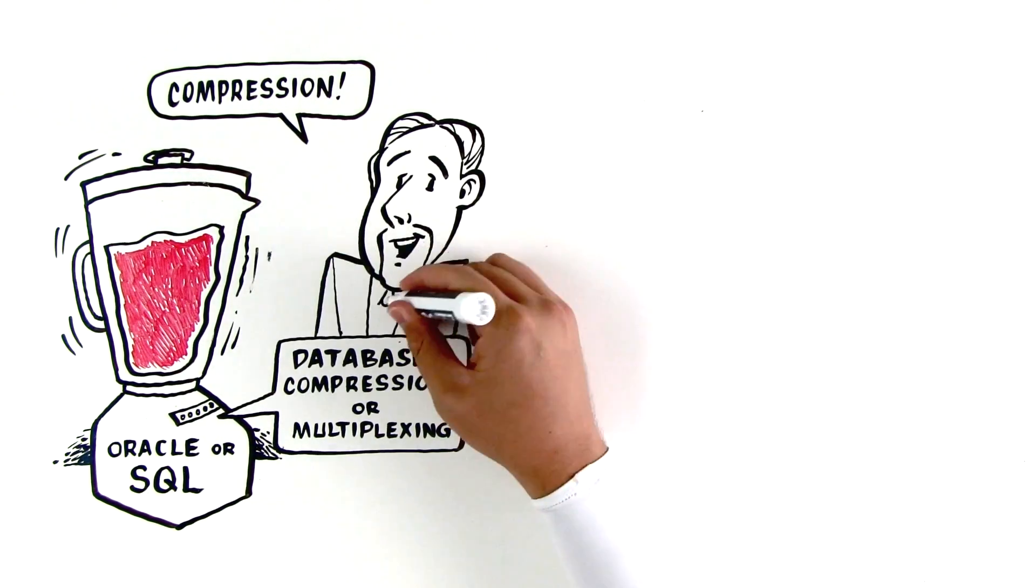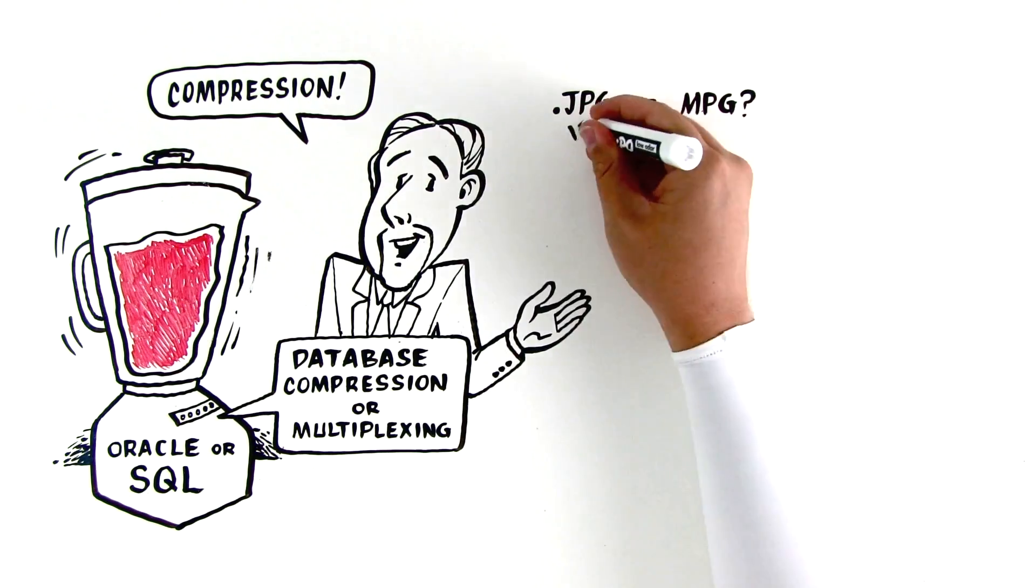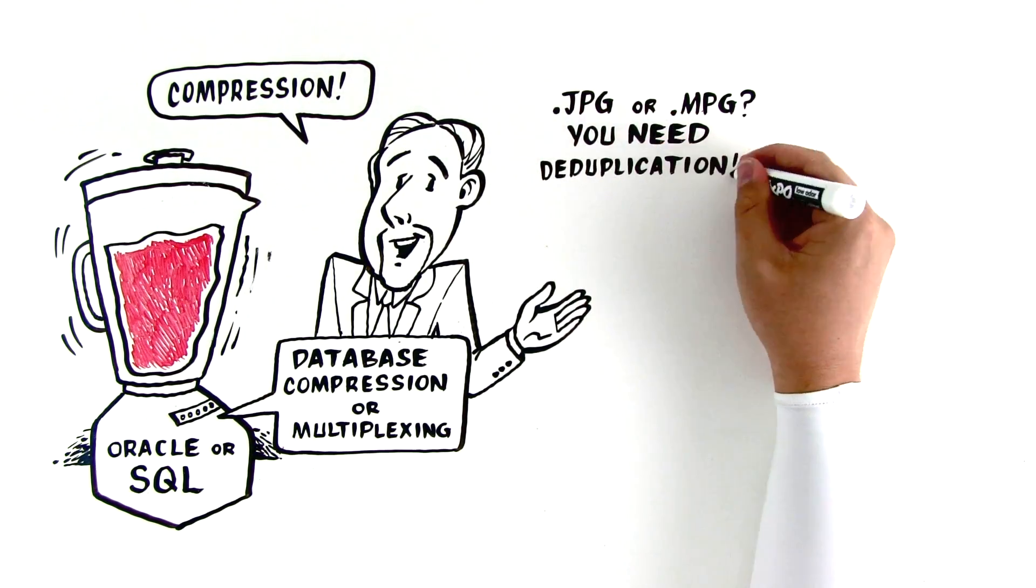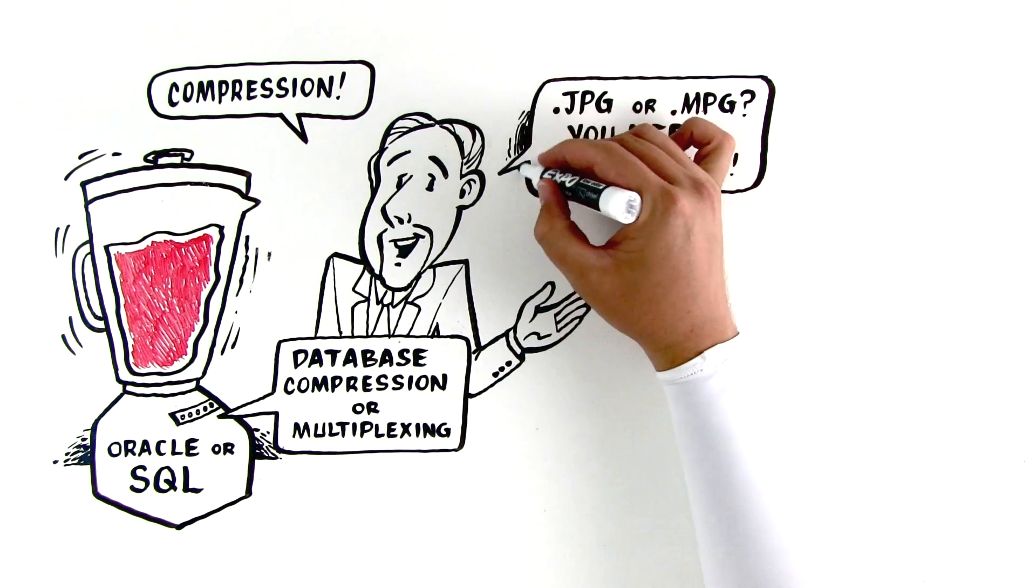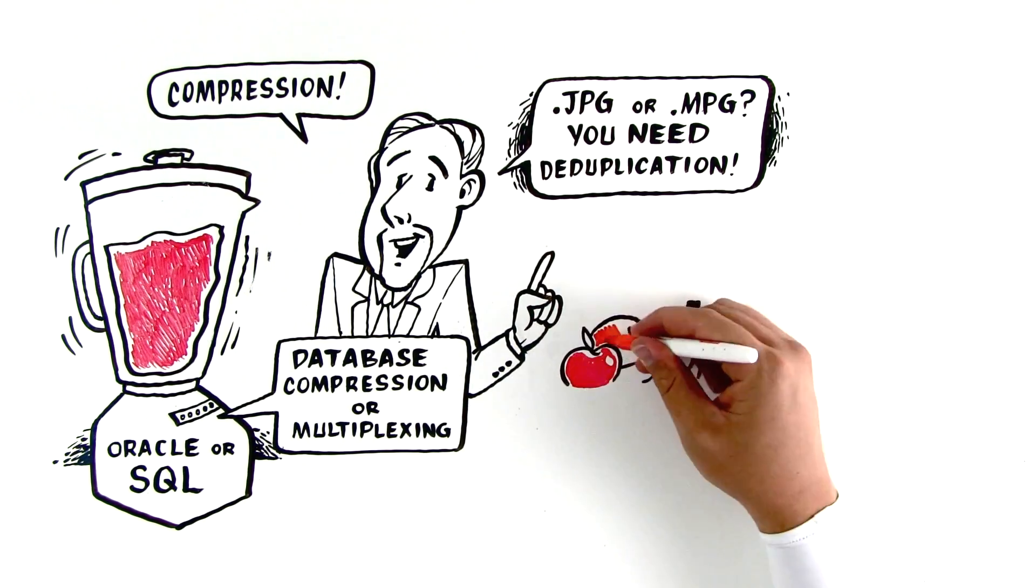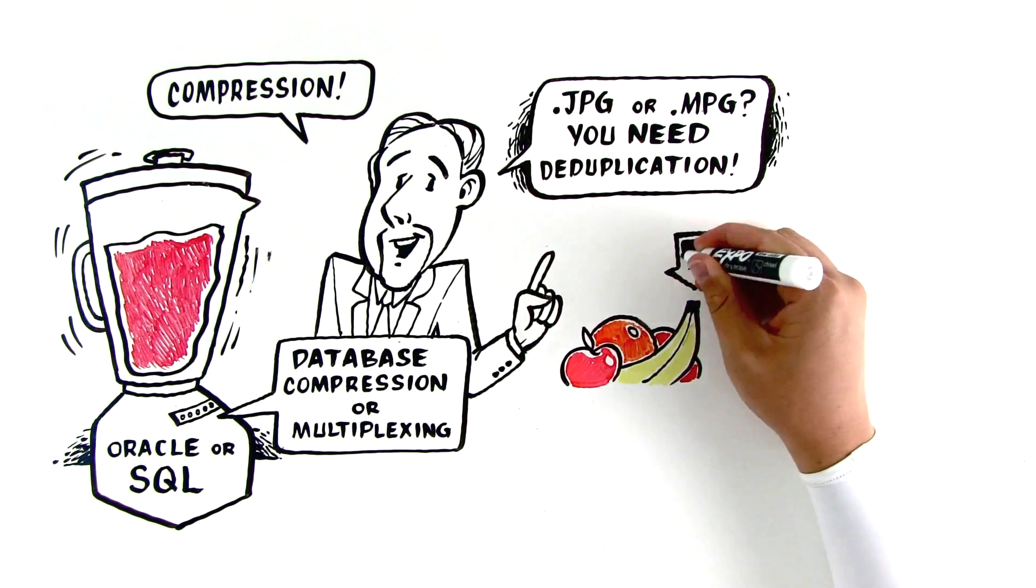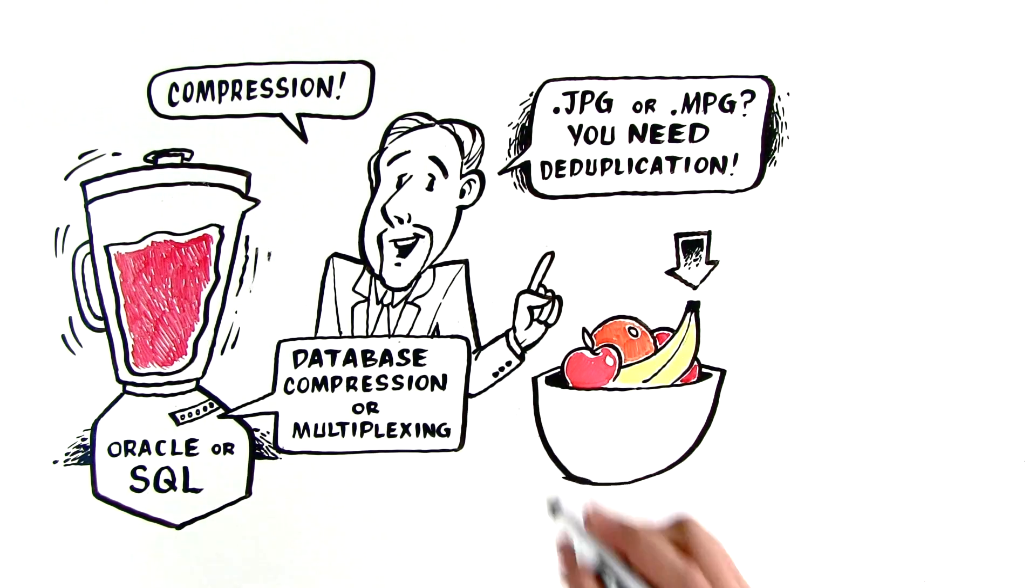Second, is your data in a pre-compressed format like JPEG or MPEG? Compression won't achieve much here, but deduplication can give you significant reductions. Here, whenever a particular set of data is called for, say, a banana in our fruit analogy, the one banana in the basket will be used to satisfy the request.